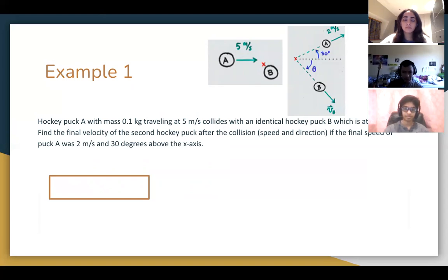If the final speed of hockey puck A was 2 meters per second and its direction is 30 degrees above the x-axis. We have a diagram at the top if you need help visualizing that. We'll give you a few seconds to pause and figure it out for yourself.